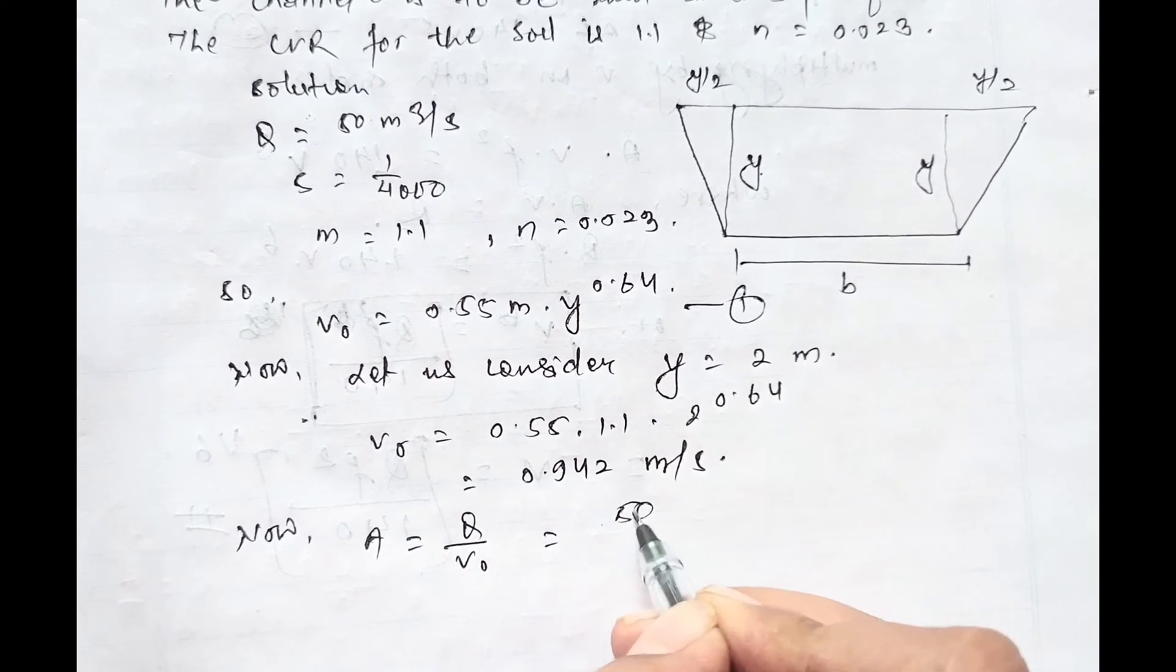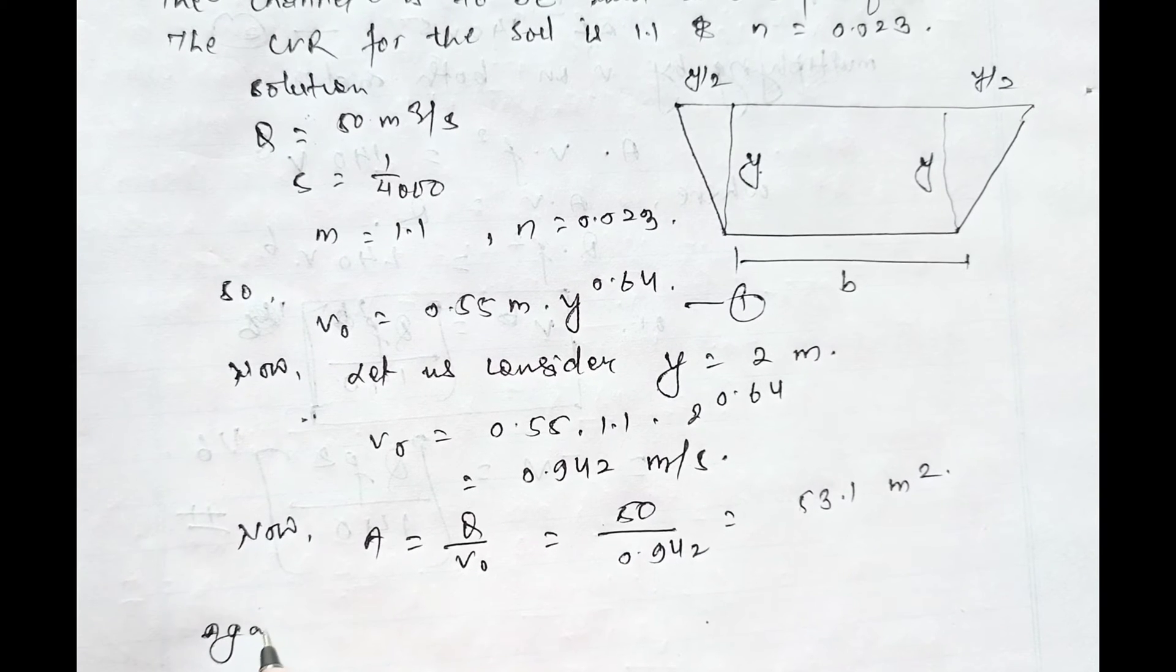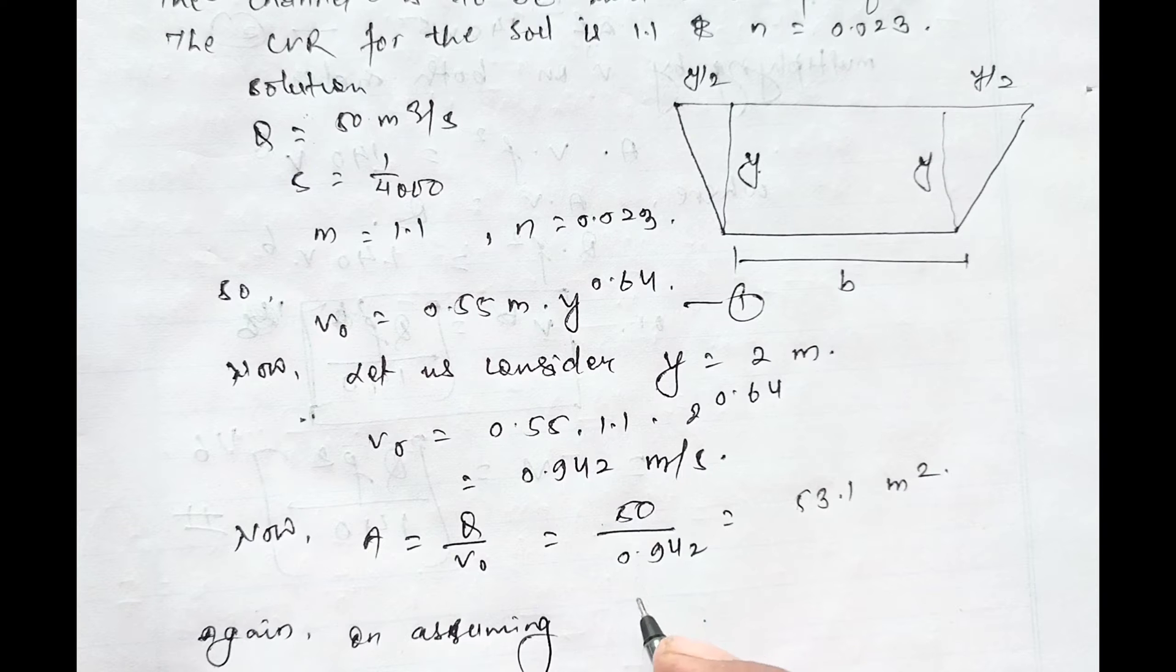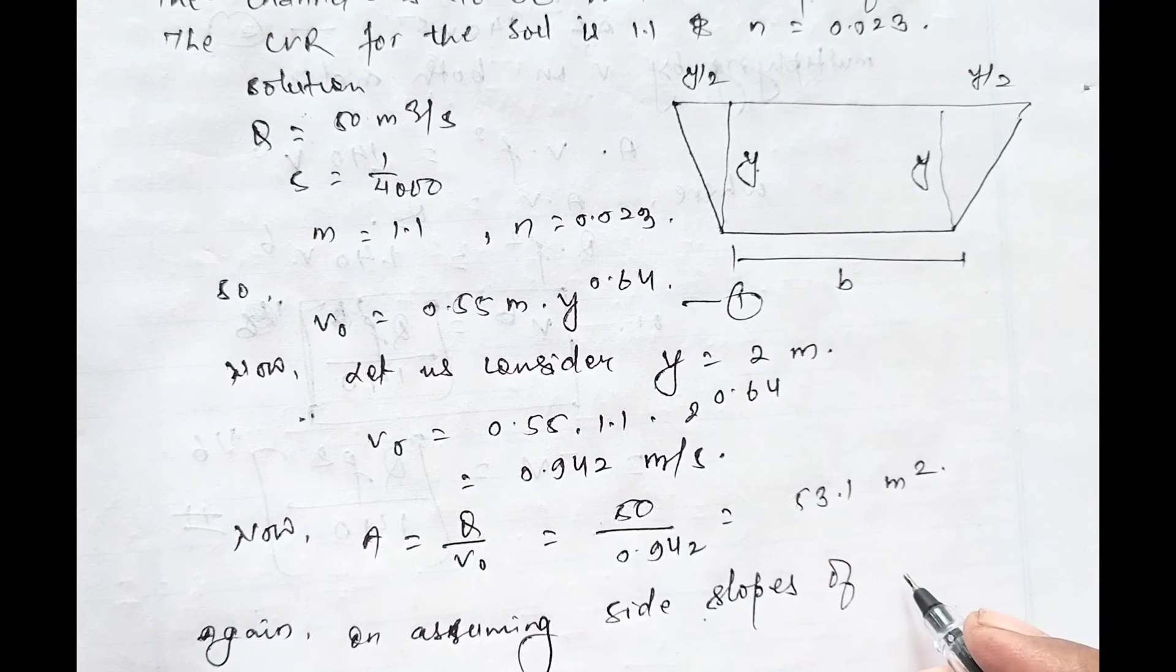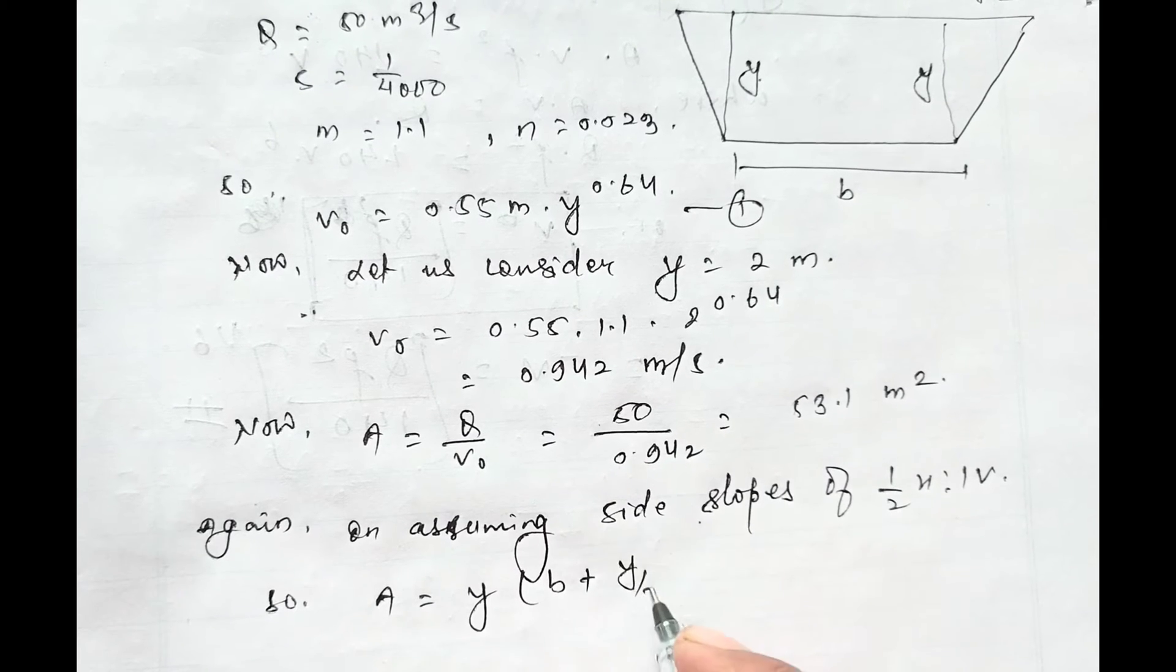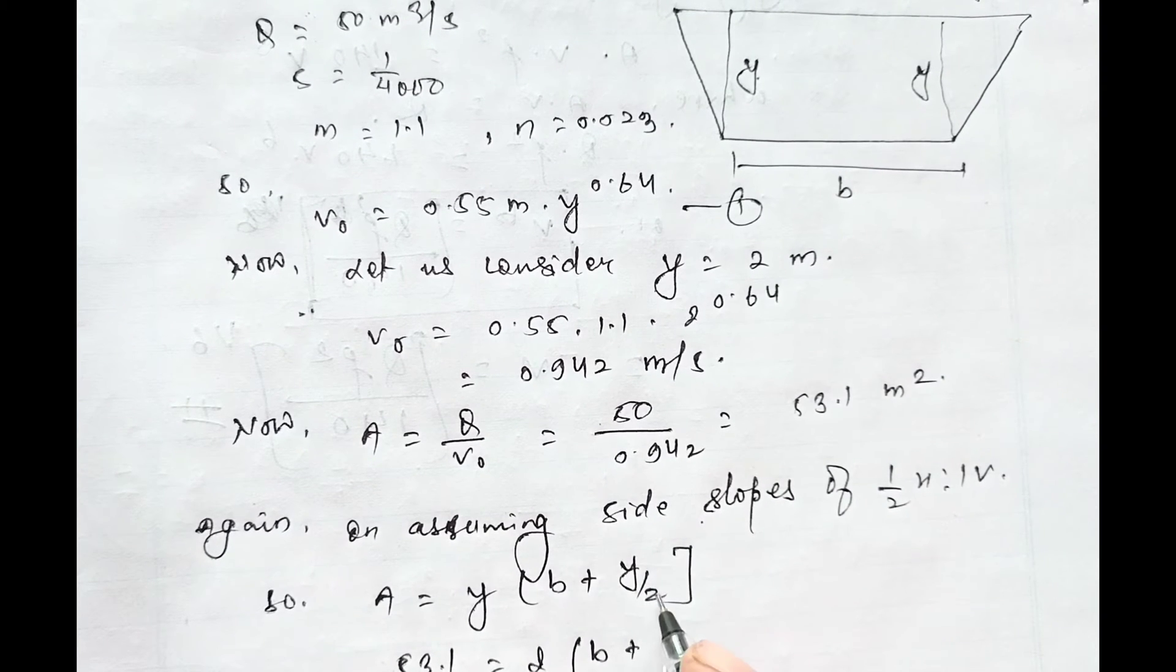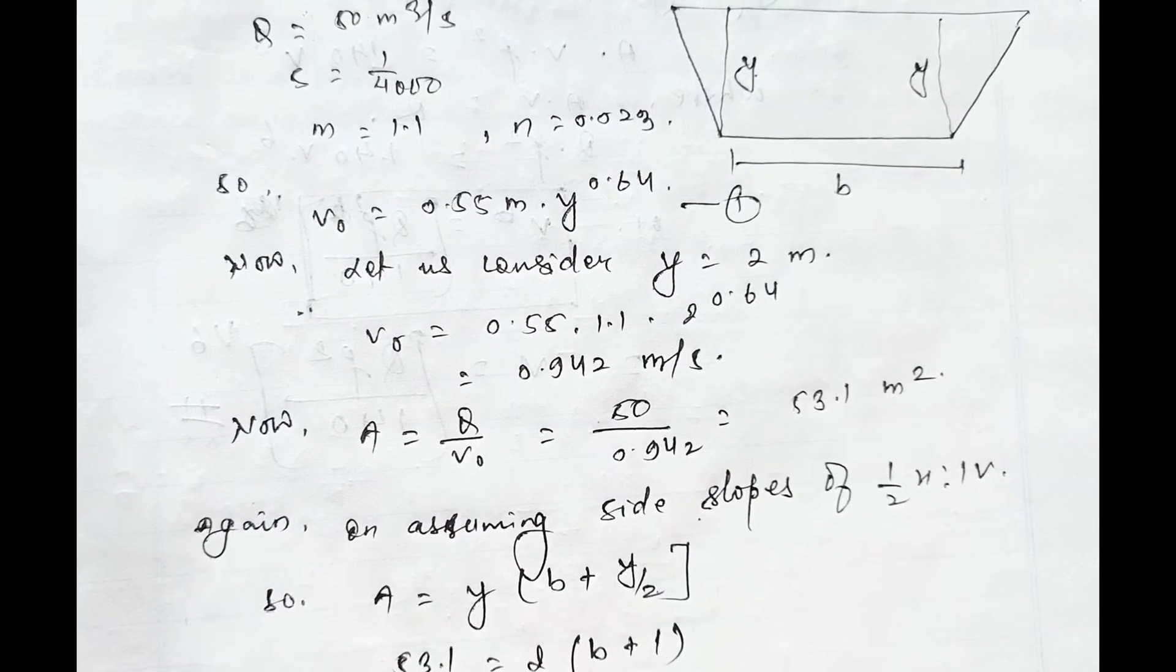Now we know area equals Q by V₀, equals 50 divided by 0.942, equals 53.1 meter square. Again, on assuming side slope of 1/2 H to 1 V, area of trapezoid equals y times (B plus y by 2). That is, 53.1 equals 2 times (B plus 1). Solving this, B equals 25.555 meter.